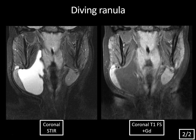We don't discretely see the mylohyoid muscle on these images because of the angle of imaging. But the mylohyoid is like a sling or hammock at the floor of the mouth that arches superior to the submandibular gland. So even though we can't see it, we can assume the ranula is piercing through the mylohyoid muscle — typical for a diving ranula. These are typically treated with surgical resection.